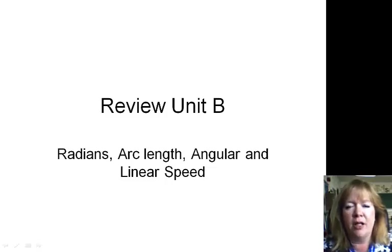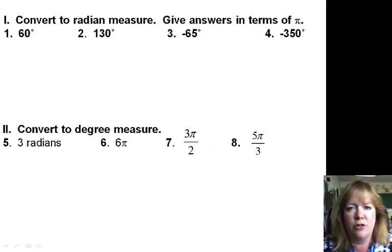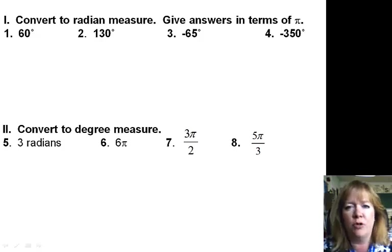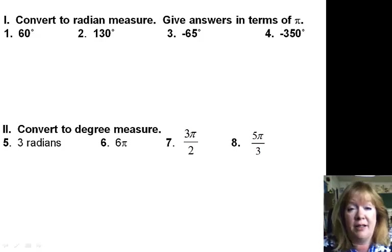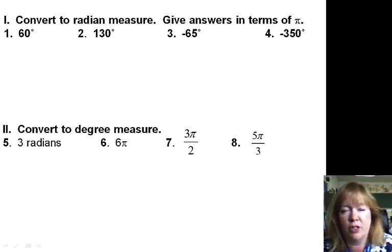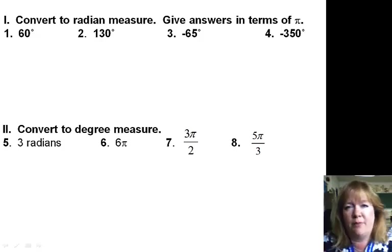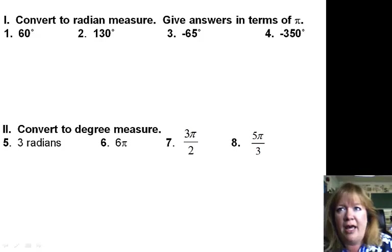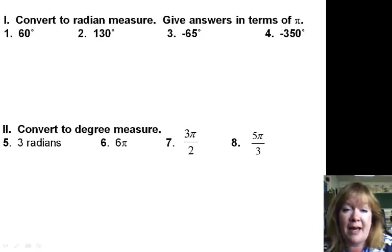Unit B was all about angles — changing from radians to degrees and back again, rotations, arc lengths, and angular speed, angular velocity. The first section of the review was to convert to radian measure and to give answers in terms of pi.